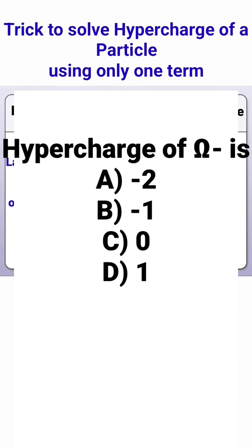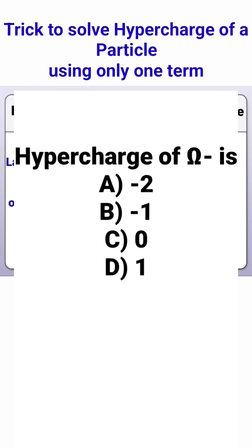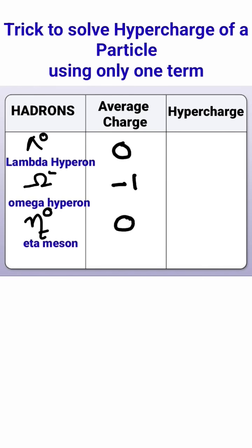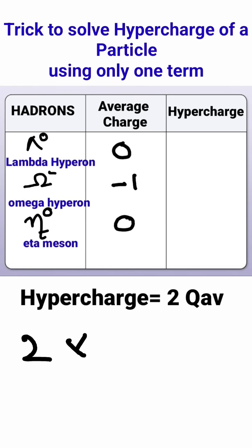Let's calculate hypercharge using average charge of the members of its family. The formula for hypercharge is equal to twice the average charge. For example, lambda hyperon exists in a singlet state with charge zero, so hypercharge will be zero for it.